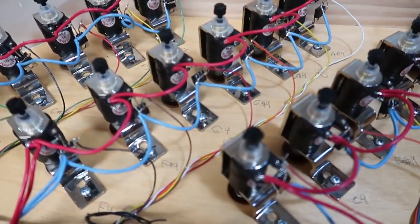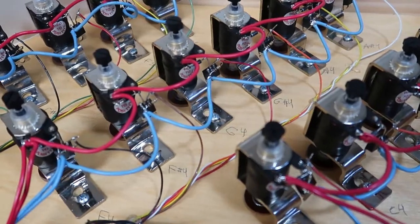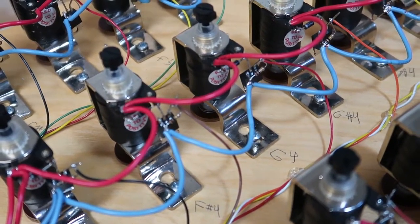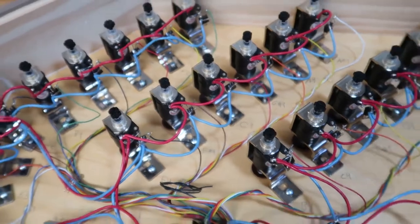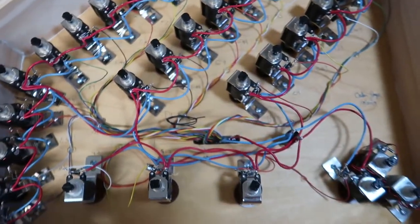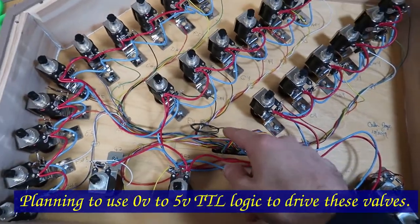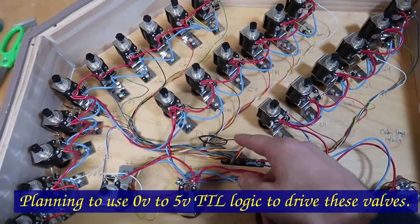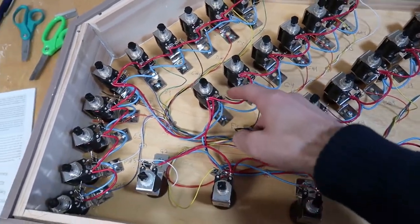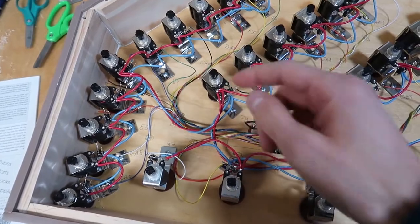Each solenoid has a FET connected to it, and that allows it to operate at low current. So the voltages coming in here will be 0 to 5 volts logic. That trips the FET which closes the solenoid.